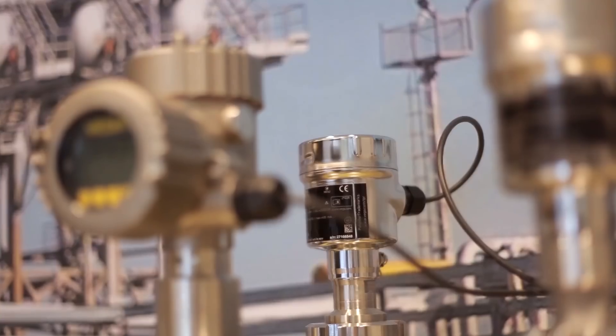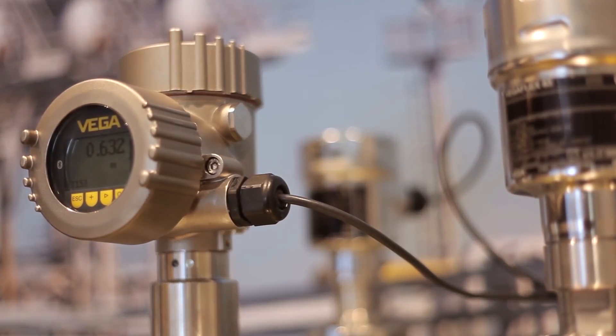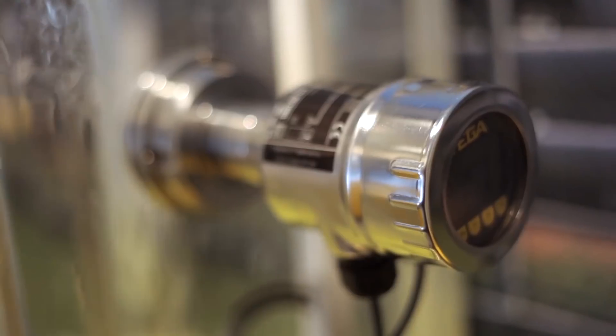How was the function test carried out until now? First, the level switch had to be removed even under difficult process conditions. Afterwards, it has to be checked manually with the medium. And finally, the control system had to be checked if the signals were received correctly.